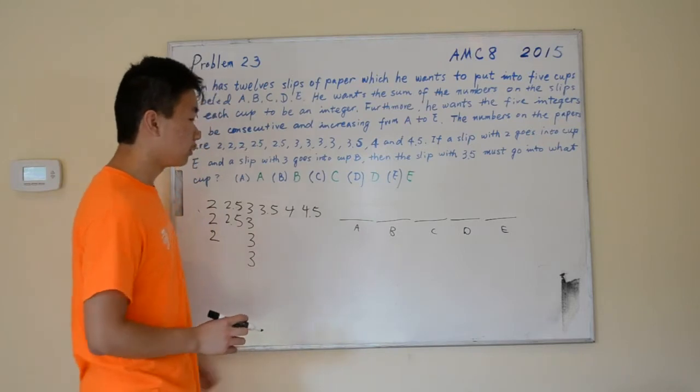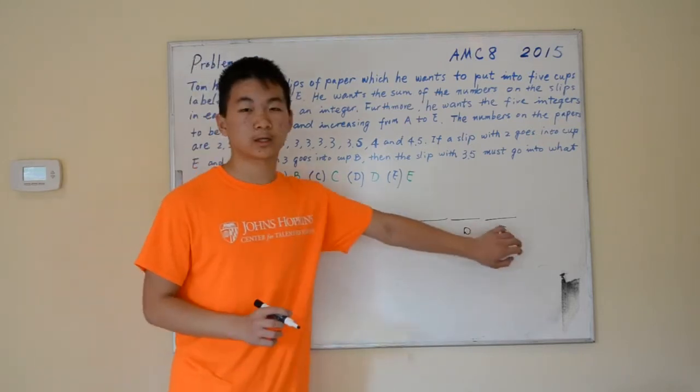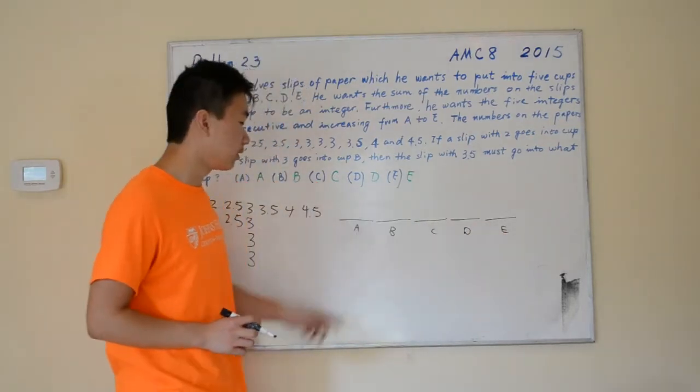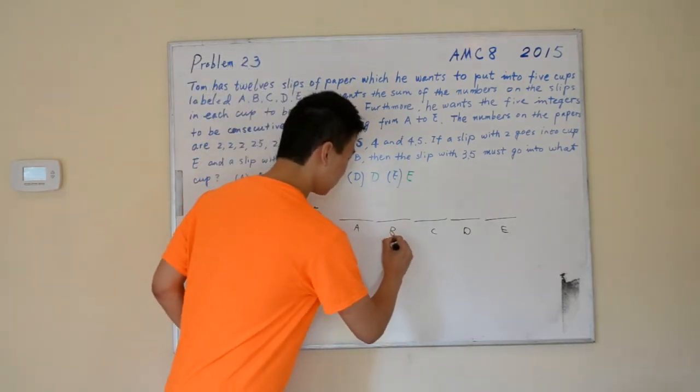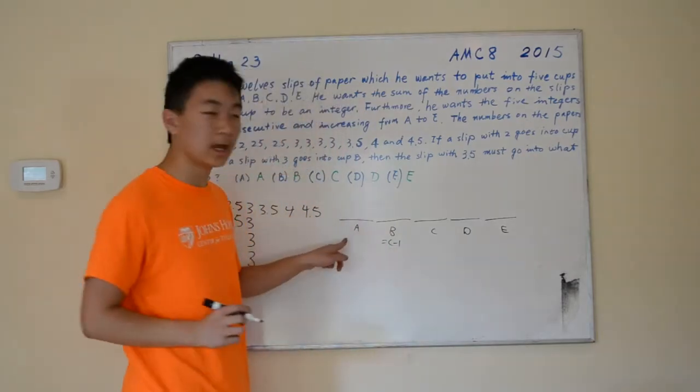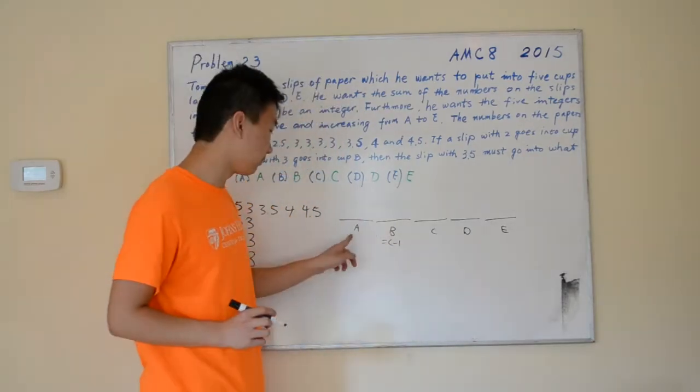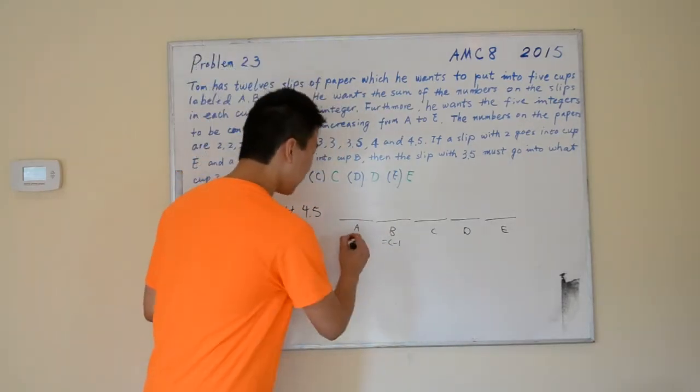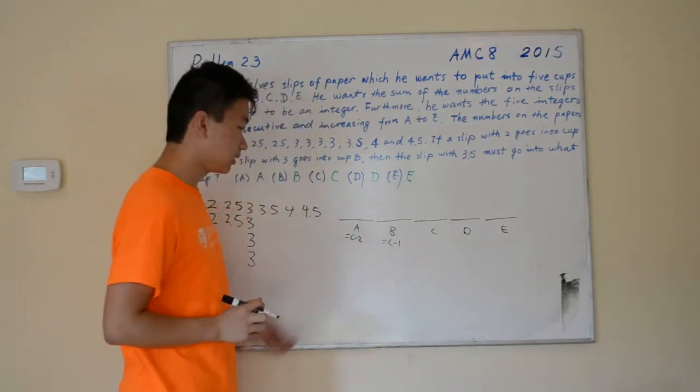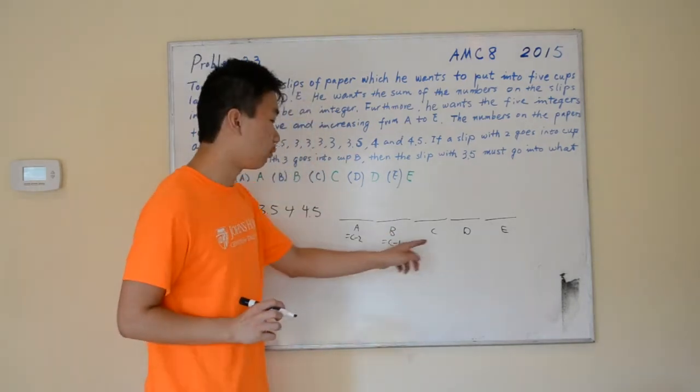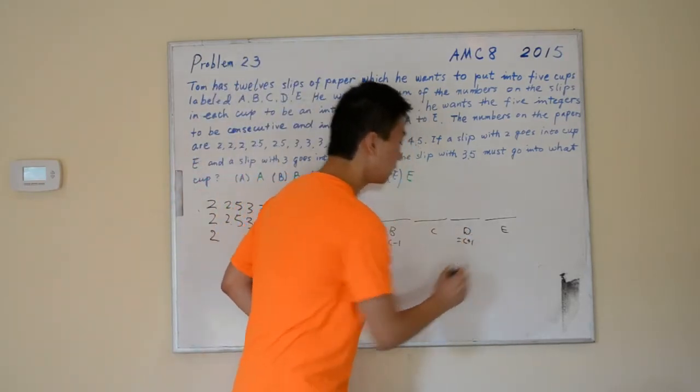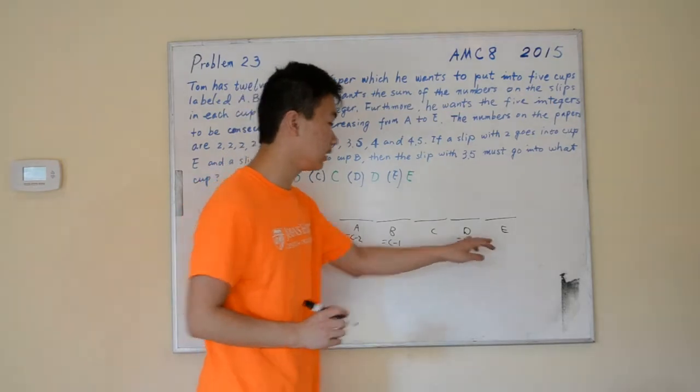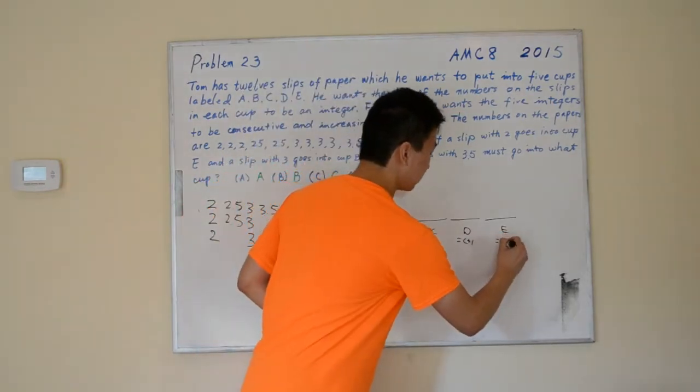We know that these cups represent consecutive integers, so that means that B is 1 less than C, so B equals C minus 1, and A is 2 less than C, so A is C minus 2. Similarly, D is 1 more than C, so D equals C plus 1, and E is 2 more than C, so E equals C plus 2.